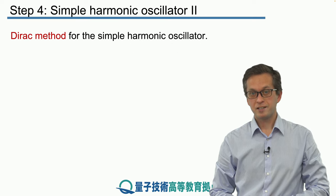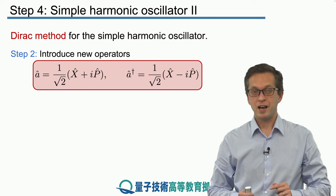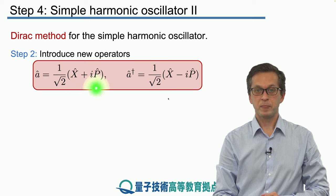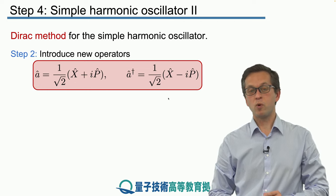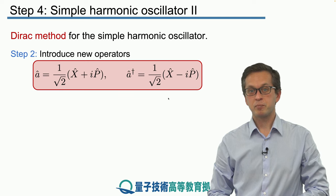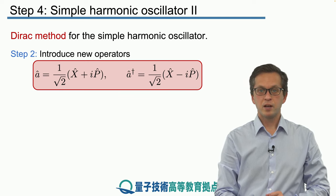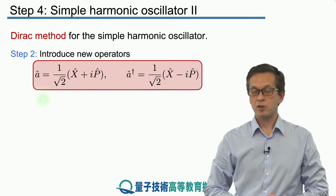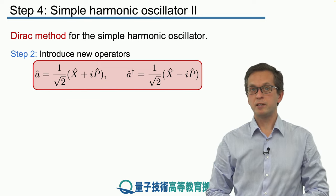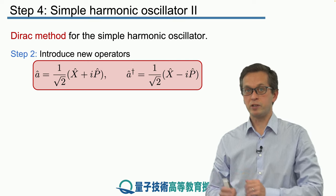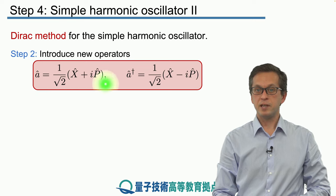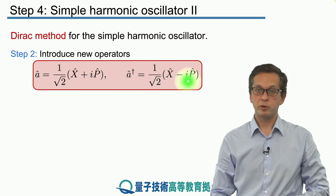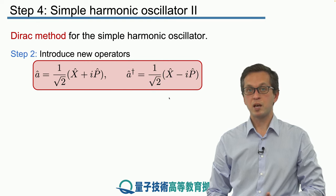Step number two is to introduce new operators. These new operators are a sum of our X and P. In particular, a hat is equal to one over square root of two times capital X plus iP. From its form, we can see that a is not a Hermitian operator. Hermitian operators have the property that the operator dagger equals the operator itself. If we take the Hermitian conjugate of a, denoted a dagger, we obtain one over square root of two times X minus iP.